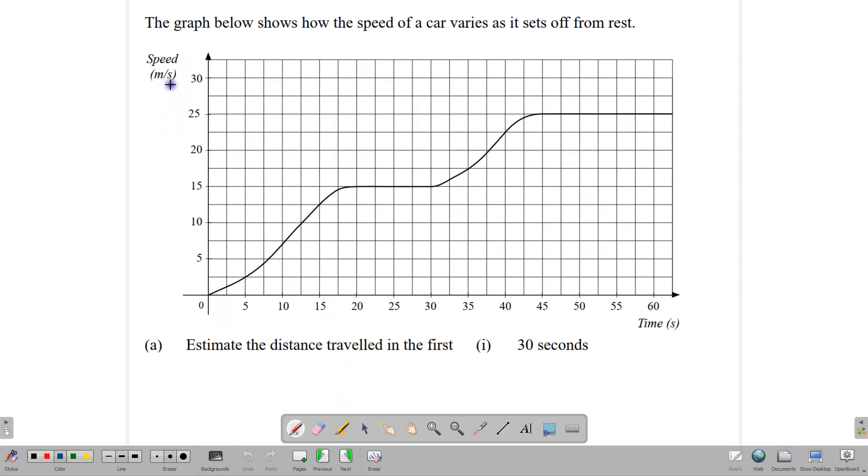Here we have a speed time graph. Notice the meters per second and on our x-axis we have time in seconds. Our question is to estimate the distance traveled in the first 30 seconds. Notice the shape of the graph. The shape is irregular. We cannot apply a single formula to this, but we can figure out the distance traveled. Since we have to work out the area, we can break this shape into pieces. In a speed time graph, the distance traveled is found by calculating the area under the graph.